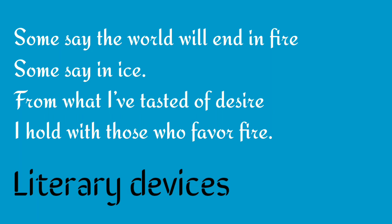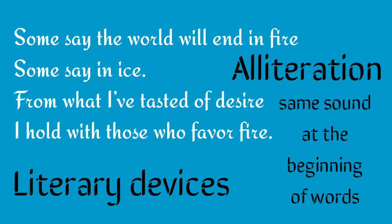The first literary device is alliteration, which is the occurrence of the same sound at the beginning of adjacent or closely connected words. For example, in 'Some say the world will end in fire,' the sounds of S and W are repeated. In 'I hold with those who favor fire,' the sound of F makes the expression musical.